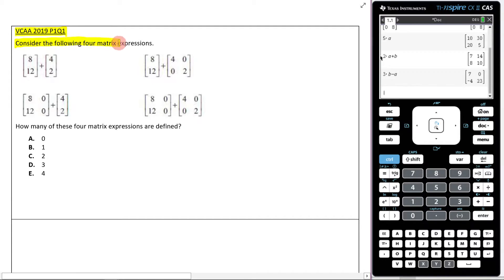It says, consider the following four matrices. How many of these four matrix expressions are defined? As you can see, we're adding. And what do we know about when we're adding matrices together? What properties do the matrices have to have? Well, for adding them, they have to have the same order.